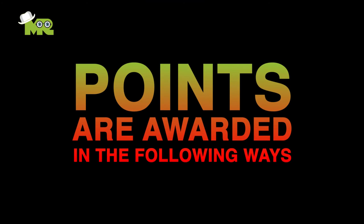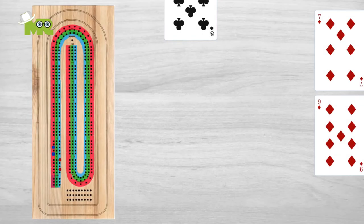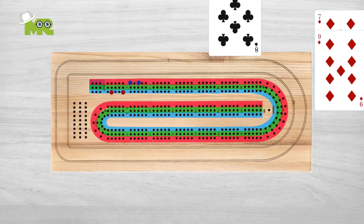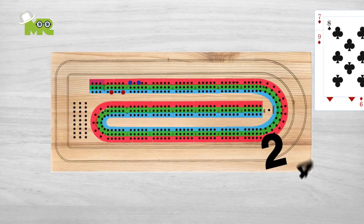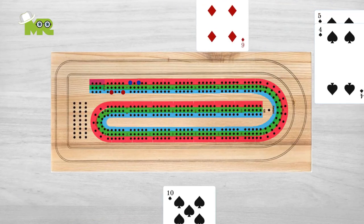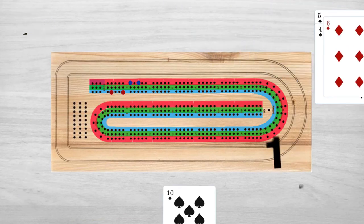Points are awarded in the following ways. Firstly, the opponent of the player who says go scores one point. Second, the player who plays the card which makes the exact total to 15 or 31 scores two points.